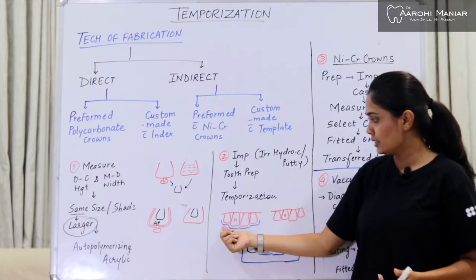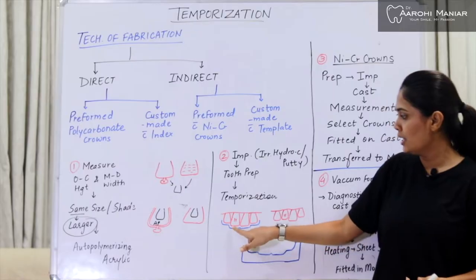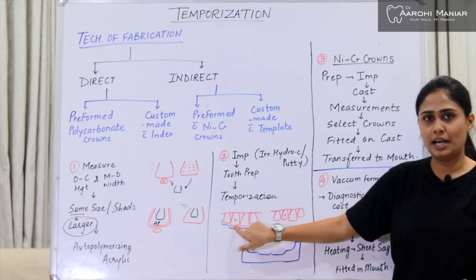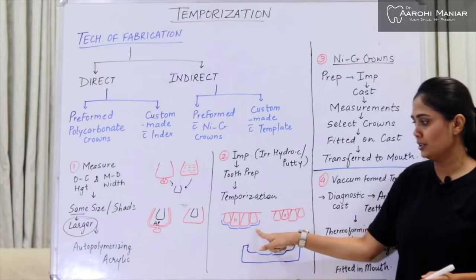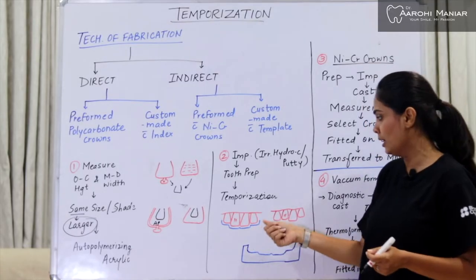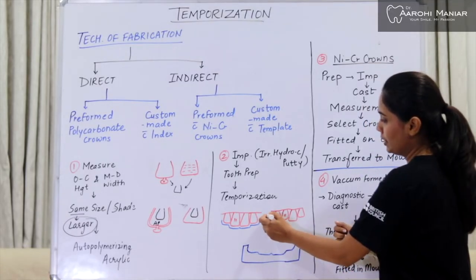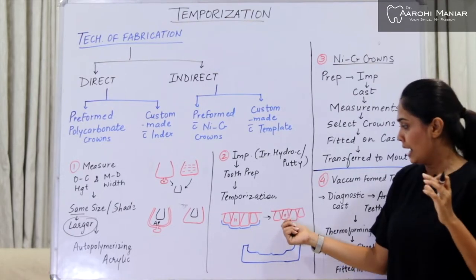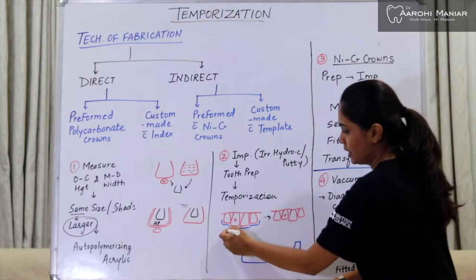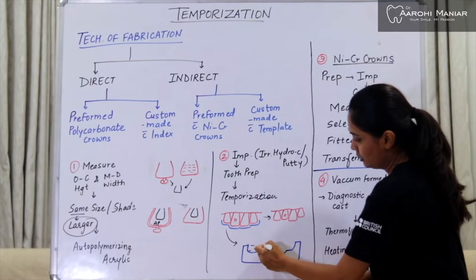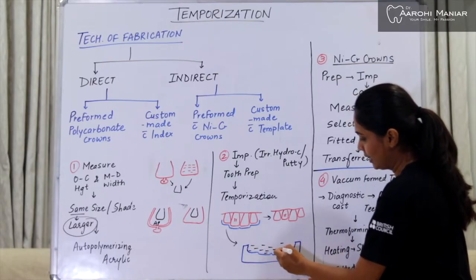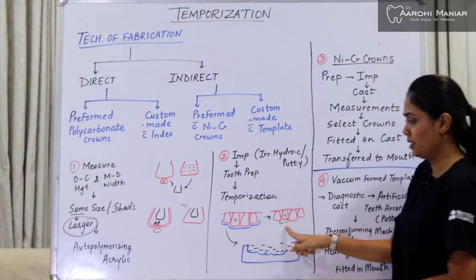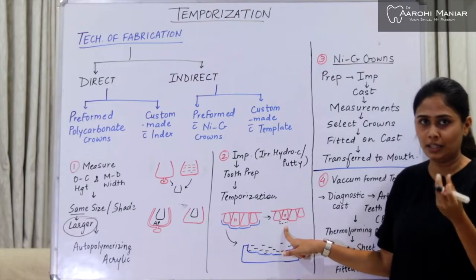In the diagram, we have lateral incisors and central incisors. The central incisor marked with a double dash is being prepared. Before preparing, we take an impression — the blue line in the diagram signifies the impression. After that, the central incisor is prepared, making it shorter from all dimensions. We then fill the impression with autopolymerizing acrylic resin and press it over the prepared tooth. The resin takes up the space of the central incisor, giving us our temporary crown.